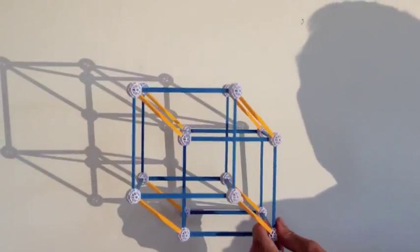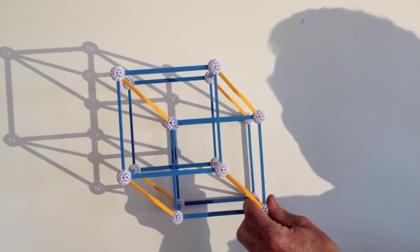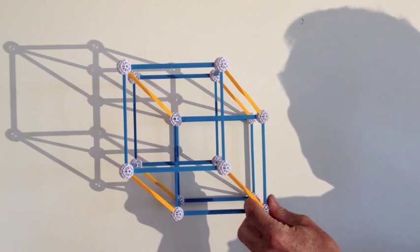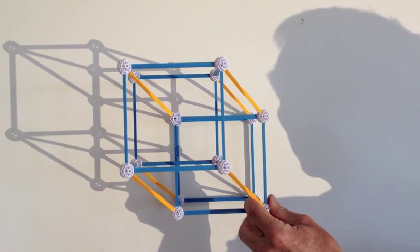And the hypercube shadow has, which lives in four dimensions, has two to the fourth corners, or sixteen.